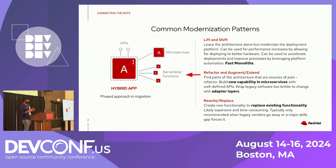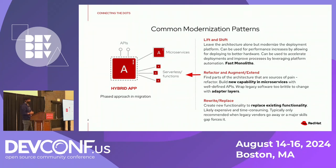When you think about application modernization and migration, there are certain common migration patterns or modernization patterns that come to mind. Some of you who are aware of Martin Fowler's book might have looked at this. One is lift and shift, where you leave the architecture alone but modernize the deployment platform. The second one is refactor, augment and extend, where you are building new capabilities in terms of microservices, keeping the original stuff as it is, and having well-defined APIs interacting with the older systems. The other type is rewrite and replace — replacing existing functionality and rewriting the whole thing.